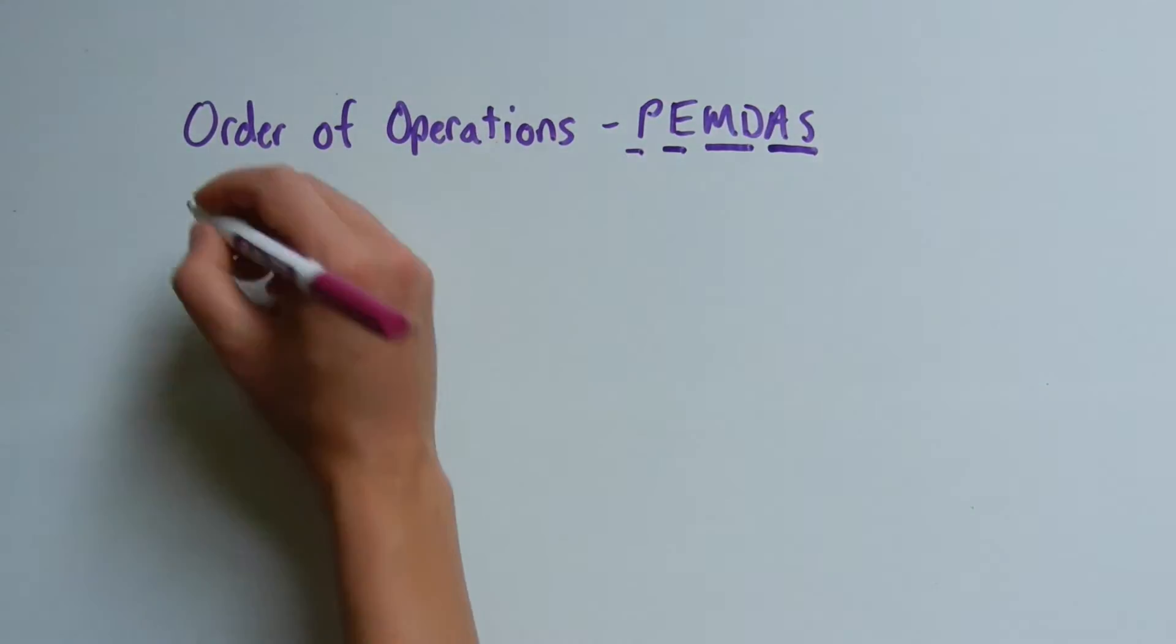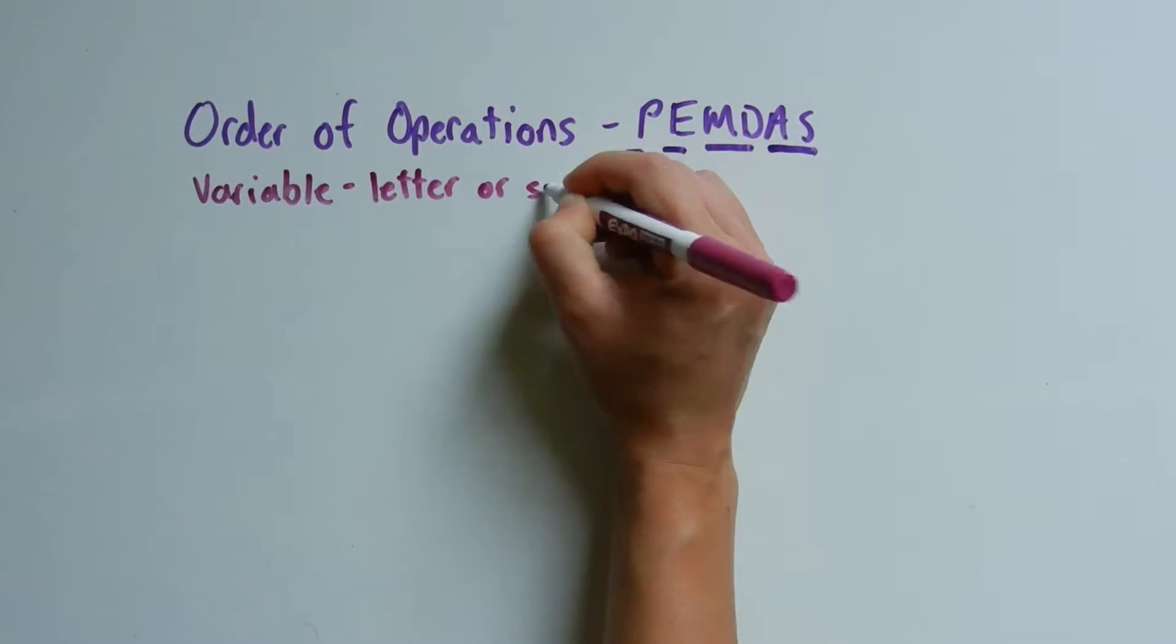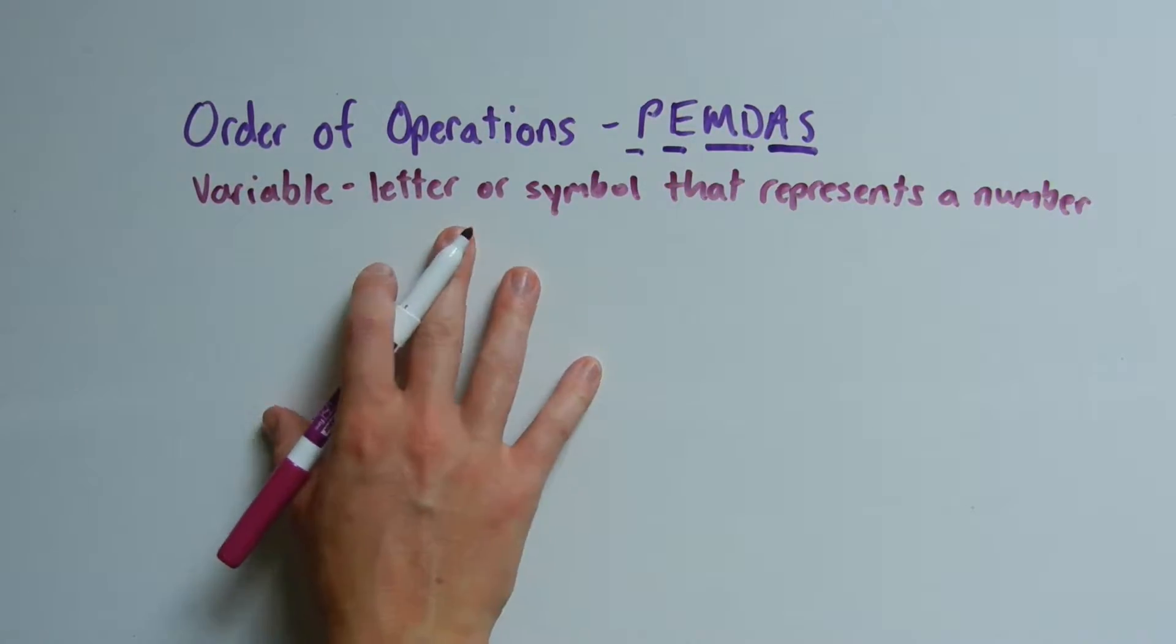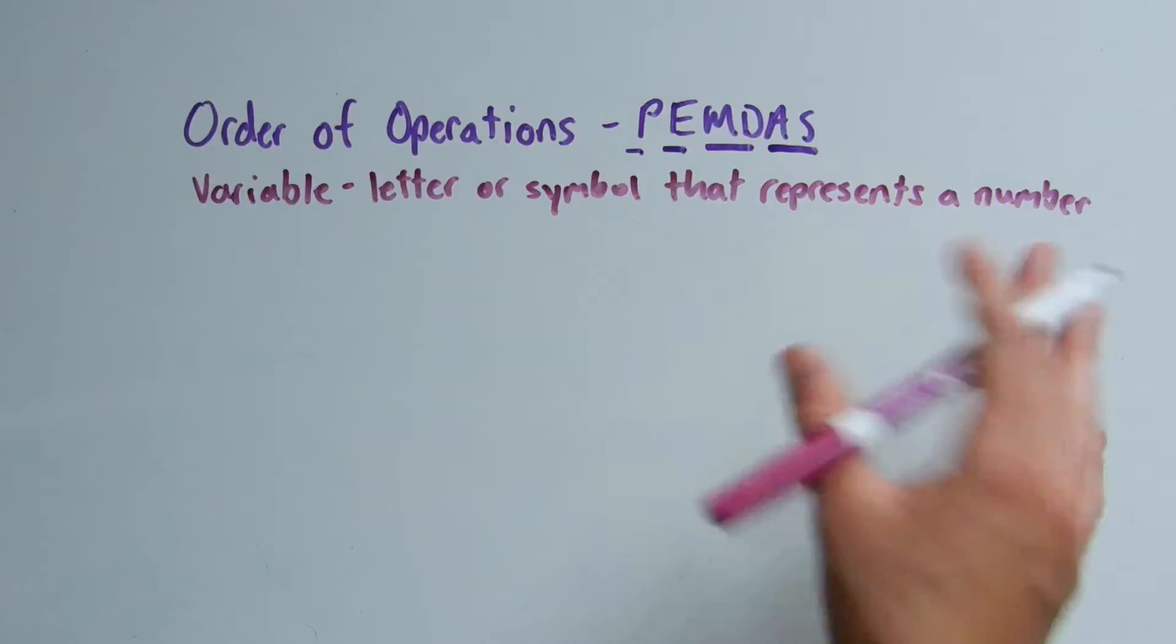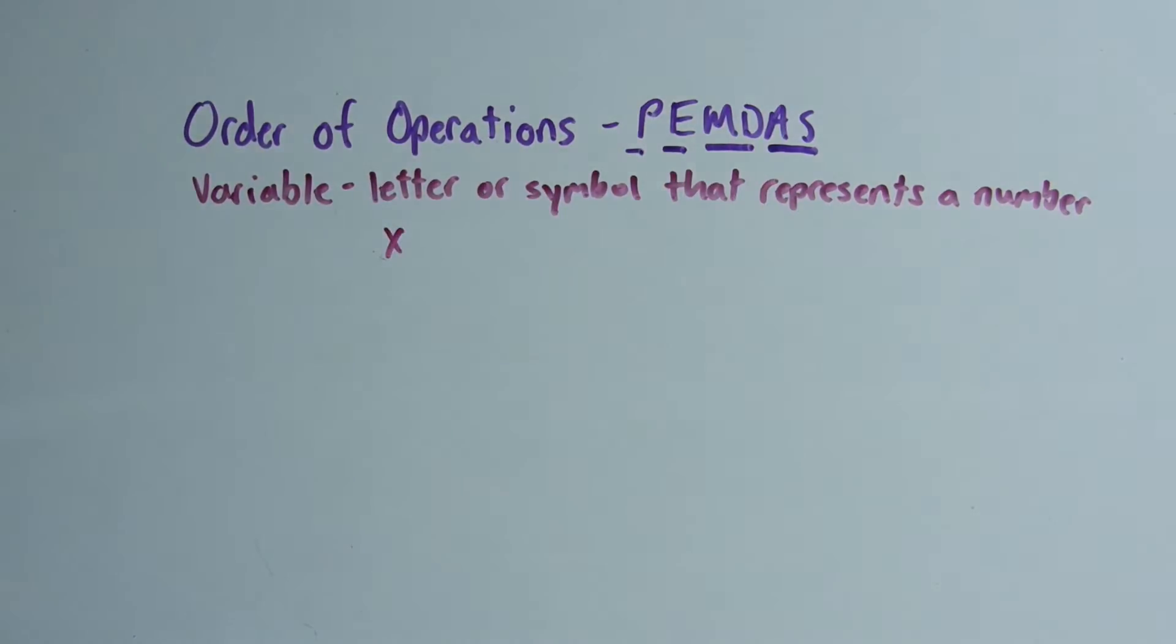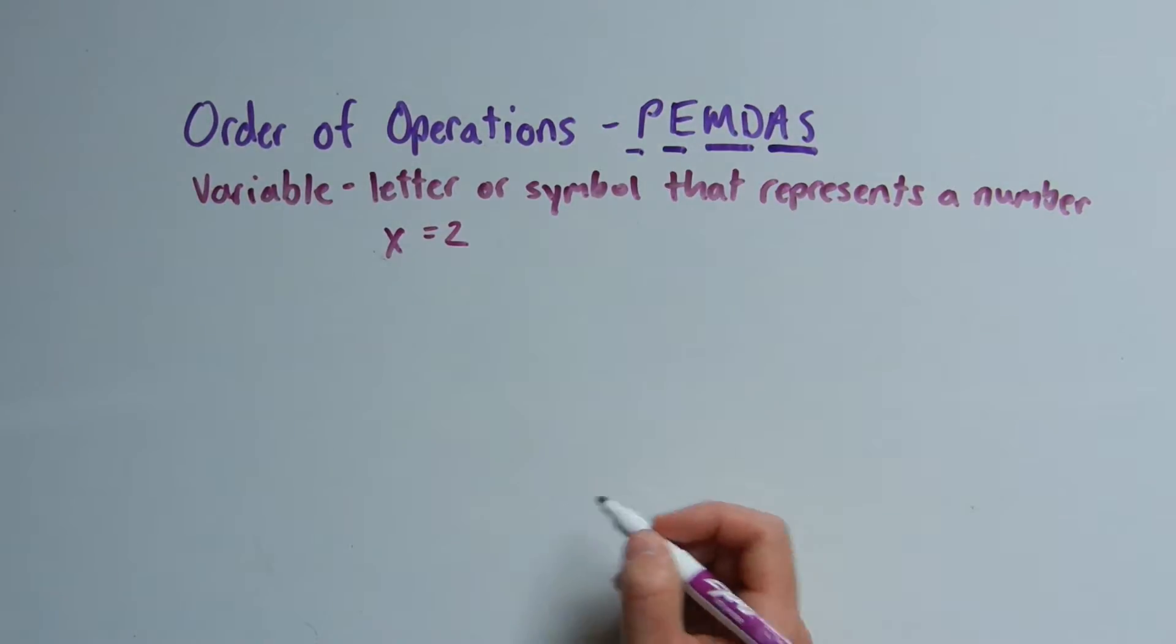Let's also review variables and what a variable is. A variable is a letter or symbol that represents a certain number. We can have x as a variable. X in one instance can equal 2, but in a later expression or equation x could equal negative 5.